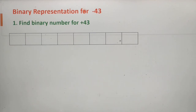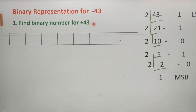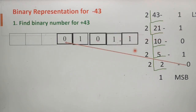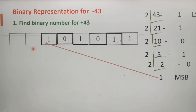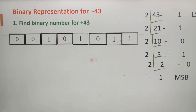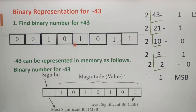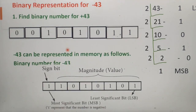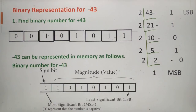Next, let's see how to represent negative numbers in computer memory — that is, the binary representation for a negative number. First, we find the binary number for plus 43 using the same repeated division by two method. Then we write each binary digit from the least significant bit in eight-bit length: 1, 1, 0, 1, 0, 1, and then two more zeros. This binary representation is for plus 43 only. For minus 43, we need to find the two's complement of this binary number. A link for the two's complement method is given in the description box. Here I will show a simple method to find two's complement from the given binary number.